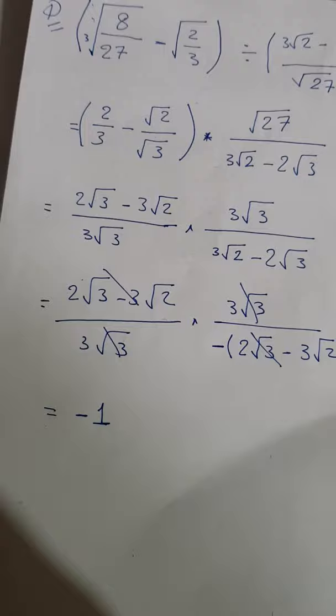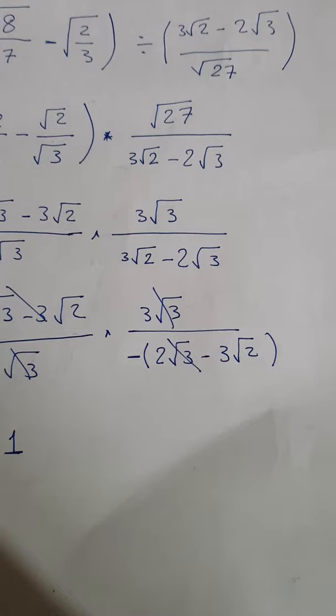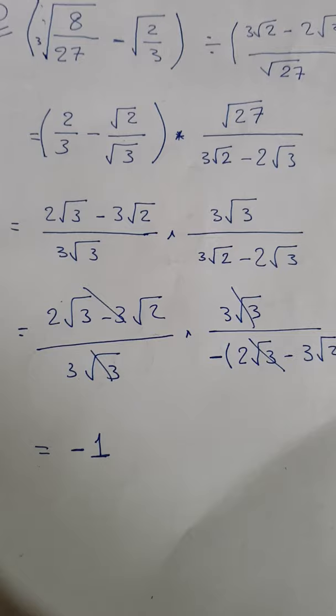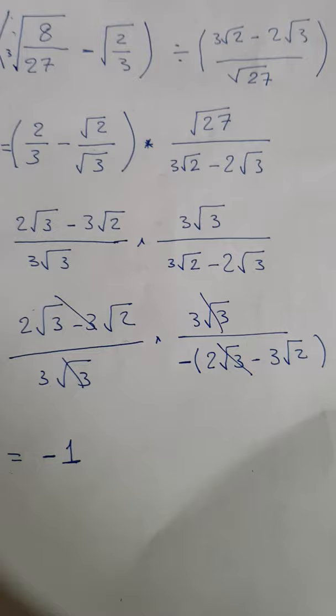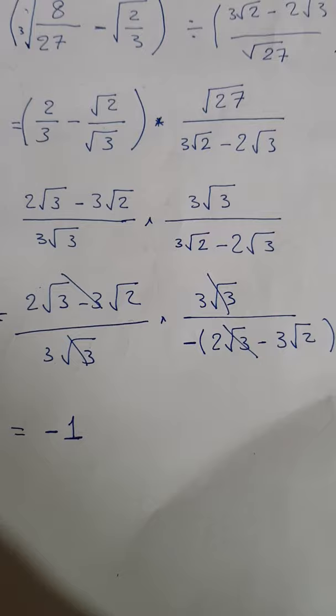Now we have three over two, minus three under the square root, multiplied by three under the square root. We have unity denominators — standardization of denominators in math. And we have finally: two times three under the square root, minus three squared under the square root, over three cubed under the square root.